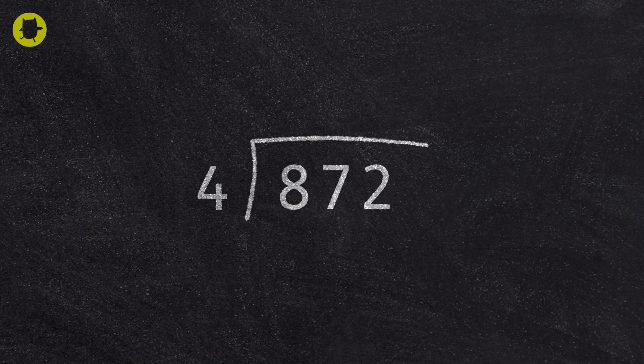We begin by asking, how many 4s are there in 8? The answer is 2, so we write the 2 above the 8. Then we ask, what is 2 multiplied by 4? The answer is 8, so we write 8 below the 8.